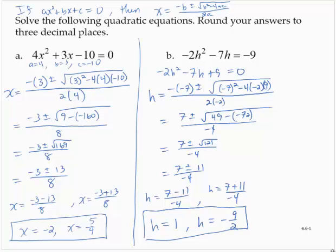In these two examples, when we found that square root, it was the square root of a perfect square, and so it came out to rational numbers.